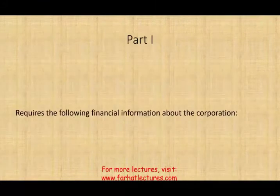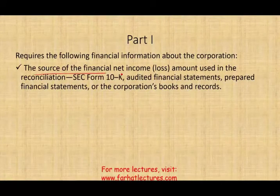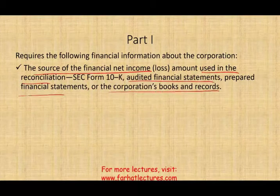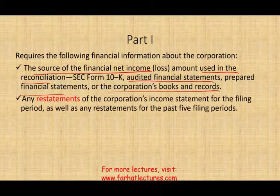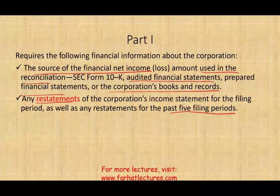There are three parts for Schedule M3. Part 1 requires the source of financial net income used in the reconciliation — audited financial statements, prepared financial statements, or the corporation's books and records. They want your detailed net income per books, any restatement of the corporation's income statement for the filing period, as well as restatements for the past five filing periods.